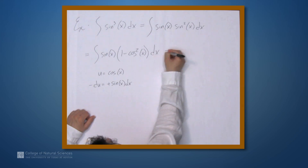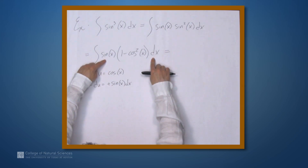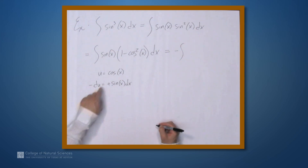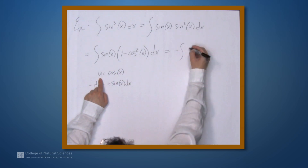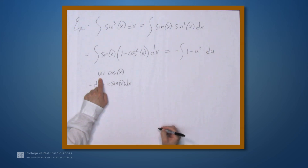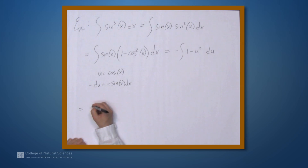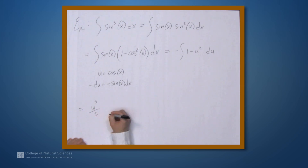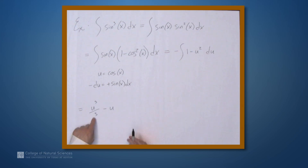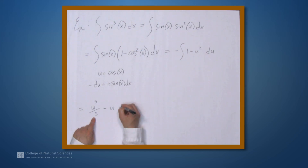In terms of u, sinx dx becomes -du. So we have the negative of the integral of (1 - u²) du, which is the integral of (u² - 1) du. We get u³/3 - u plus C.